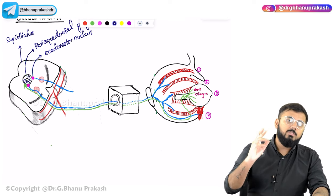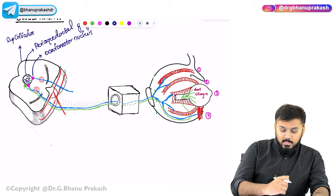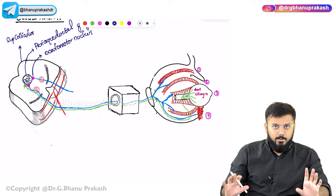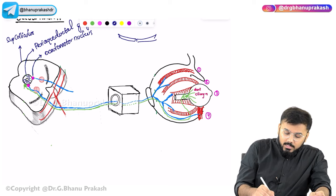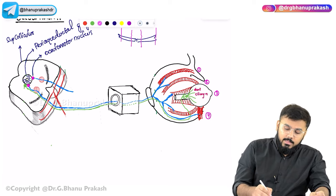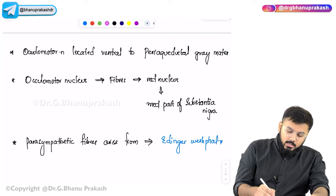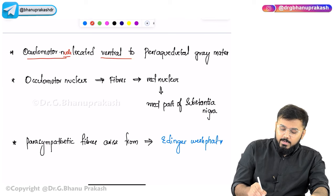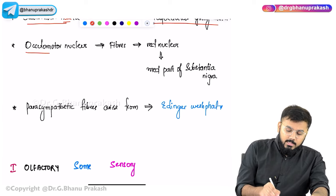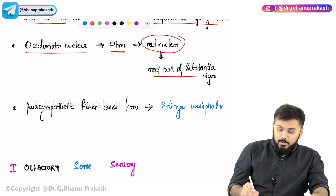These fibers cross the red nucleus and also cross a black substance called the substantia nigra — specifically from the medial aspect of the substantia nigra. So, the oculomotor nucleus is ventral to the periaqueductal gray matter, and the fibers first cross the red nucleus, then the medial part of the substantia nigra.